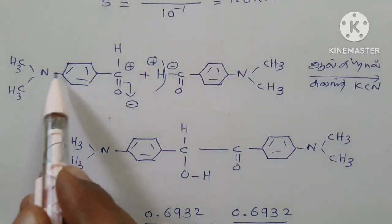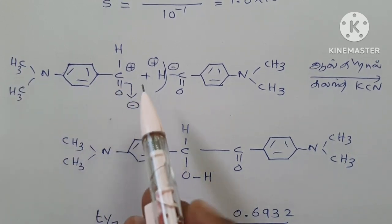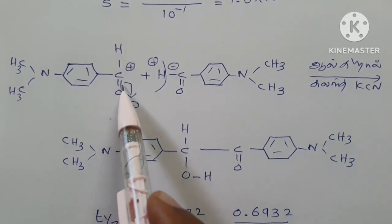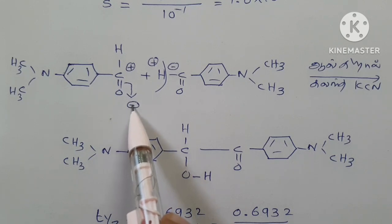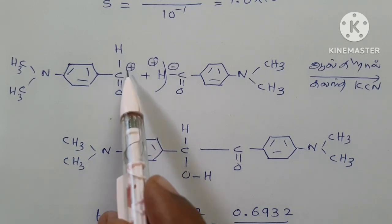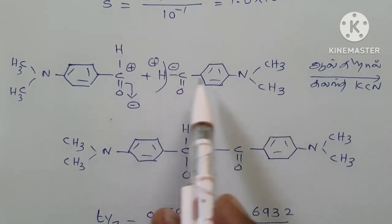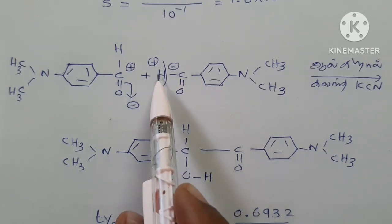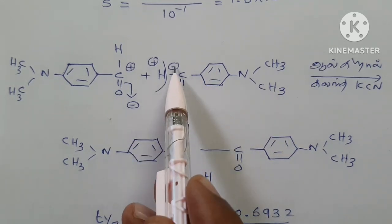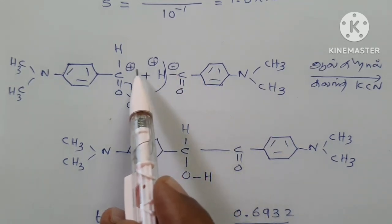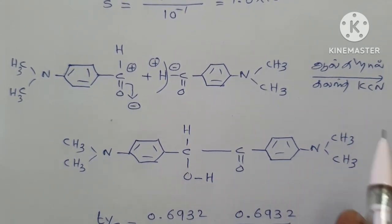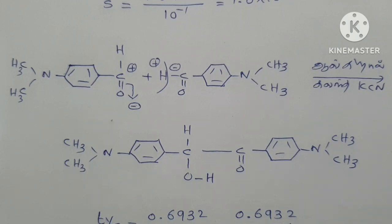For para-N,N-dimethylaminobenzaldehyde: oxygen pulls the shared pair of electrons towards itself, becoming negative, and carbon becomes positive. Another molecule of N,N-dimethylaminobenzaldehyde reacts, and the reaction takes place in the presence of alcoholic KCN.